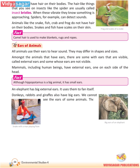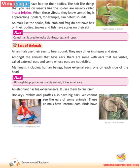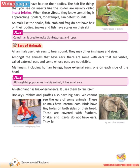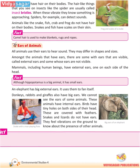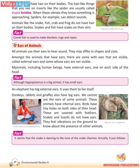We cannot see the ears of some animals. These animals have internal ears. Birds have tiny holes on both sides of their head, which are covered with feathers. Snakes and lizards do not have ears; they feel vibrations on the ground to know about the presence of other animals. It seems that the snake is dancing to the tune of the snake charmer, but actually it just follows the movements of the snake charmer's been.